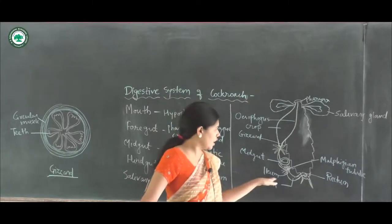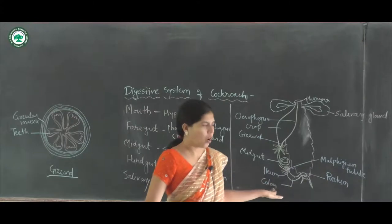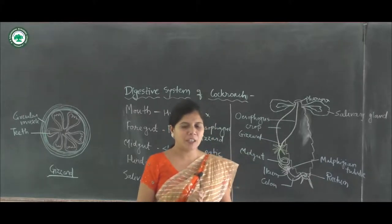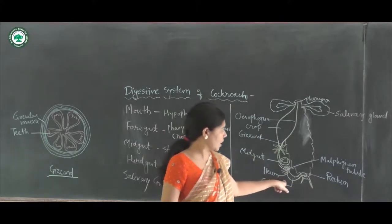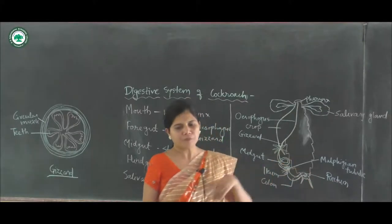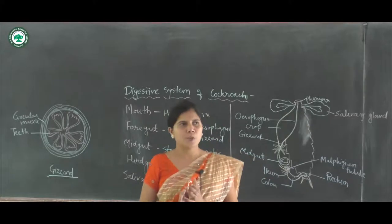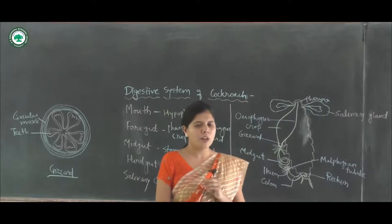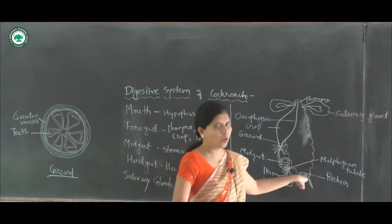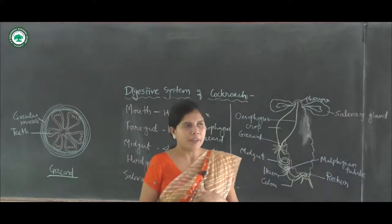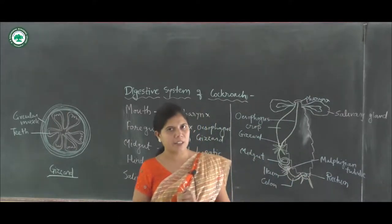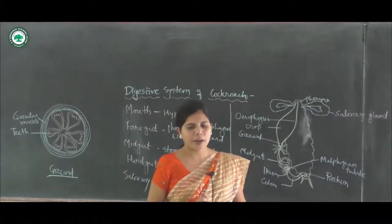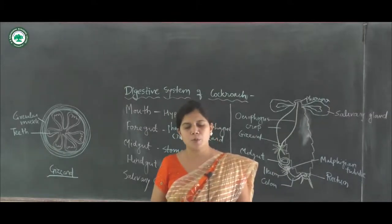The colon is a long and wider part of the hindgut. It sends waste material towards the rectum and reabsorbs water from the waste material. The rectum is an oval or spindle-shaped organ present at the terminal end of the hindgut. It contains six rectal pads along its internal surface for the absorption of water.